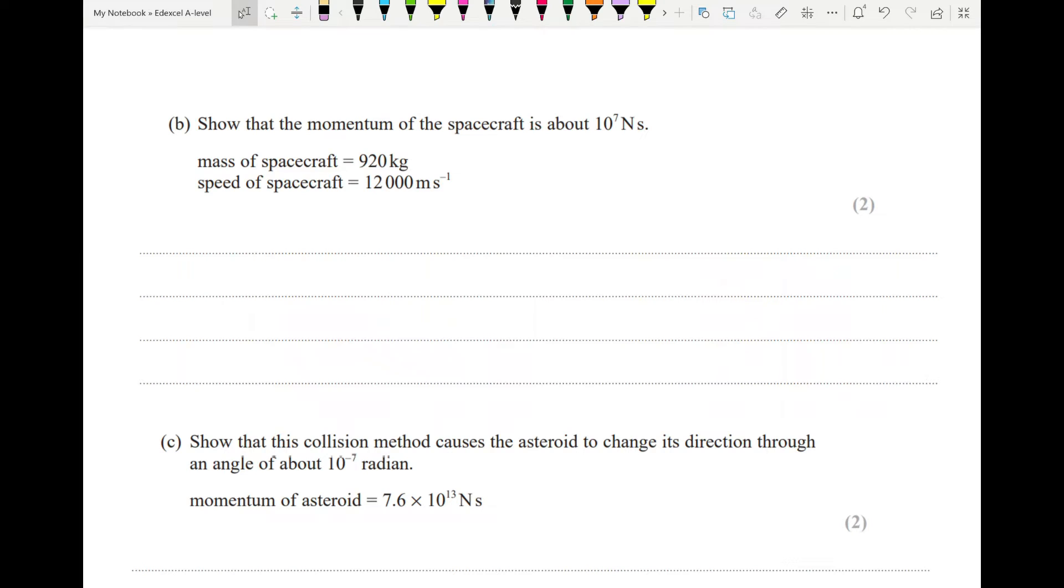Show the momentum of the spacecraft is about 10 to the 7 newton seconds. This, of course, is an alternative unit for momentum. Normally we would put the unit as kilograms meters per second, but newton seconds does just as well because that is impulse, which is the same as change in momentum. This looks very straightforward. We are just calculating the momentum, which is mass times velocity. So we're going to go 920 times 12,000, giving us a momentum of 1.104 times 10 to the 7 kilograms meters per second or newton seconds. So far, so good.